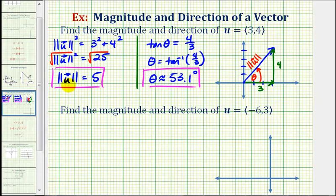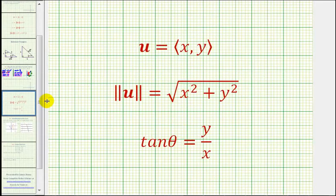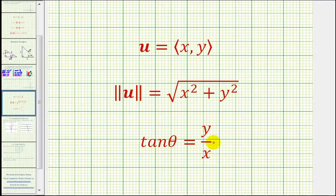Now for our second example, we'll use the formula seen in most textbooks. If we're given a vector u in component form, the magnitude of u is equal to the square root of x squared plus y squared — this is just the Pythagorean theorem. And tangent theta is equal to y divided by x. We used both of these formulas in the first example; we just developed them ourselves using the right triangle.